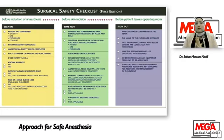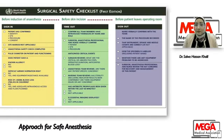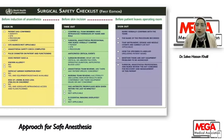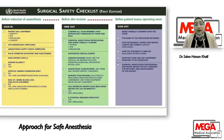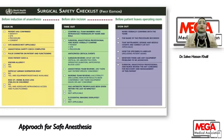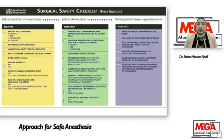Sign out occurs before the patient leaves the operating room. The nurse verbally confirms with the team the name of the procedure, and that instrument, sponge, and needle counts are correct. Any specimens taken should be labeled with the patient's name. Equipment issues are addressed. The surgeon, anesthesia professional, and nurse review key concerns for patient recovery — whether the patient goes to the ward or ICU, first oral intake, anticoagulation, medications, and positioning — all discussed before the patient leaves the operating room.